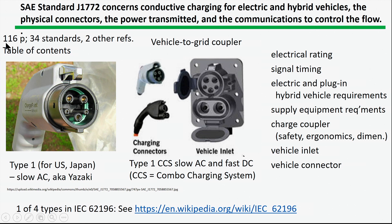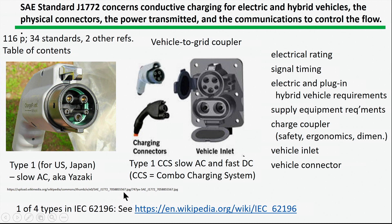That particular document has 116 pages and references 34 other standards. Here you can see the kinds of connectors that exist and something about who developed them. For example, the Type 1 is sometimes called the Yazaki standard, and there's also a Type 1 CCS because it's a combination connector. Some characteristics dealt with include the electrical rating, timing of control signals, supply equipment requirements, and safety issues. There is also a very nice Wikipedia entry referencing an IEC document that covers these types of connectors.